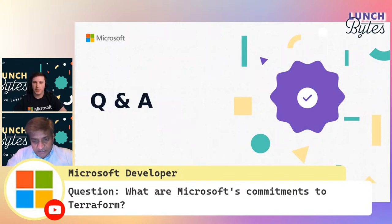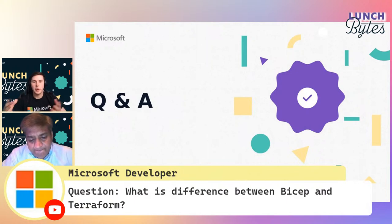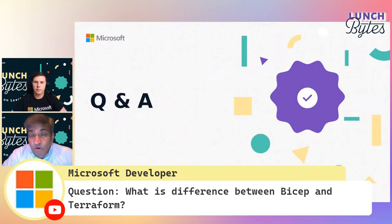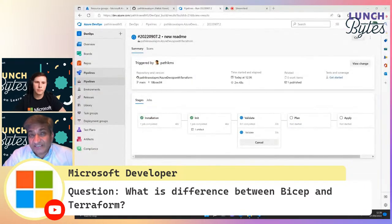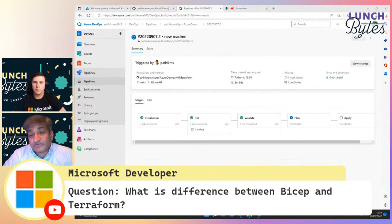Another question: what are the differences between Bicep and Terraform? The main difference is multi-cloud support. Both languages are very similar in terms of readability and simplicity. However, Bicep only supports Azure — it doesn't support other public clouds. Bicep is Microsoft's own product, so if you're working exclusively on Azure, Bicep is a good fit. But if you need multi-cloud or hybrid deployments, Terraform is the better choice.